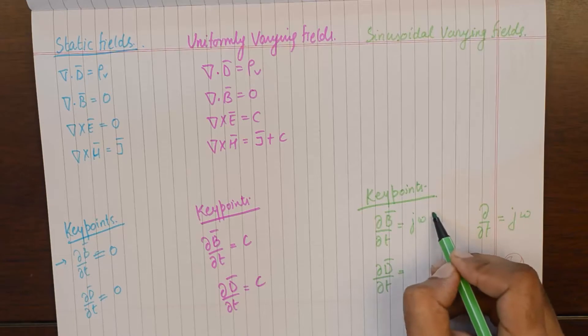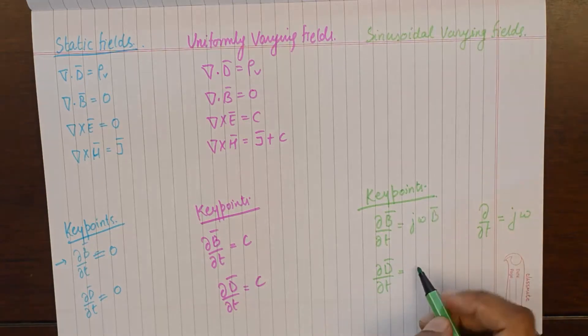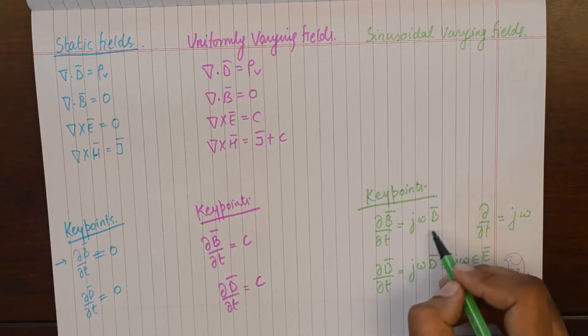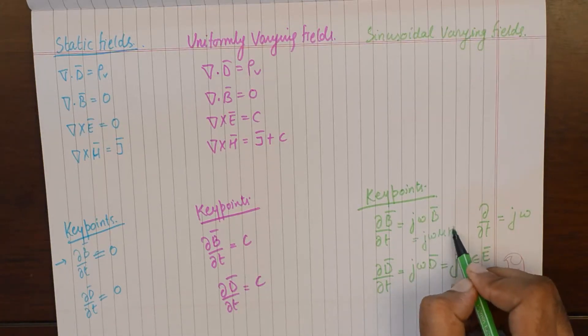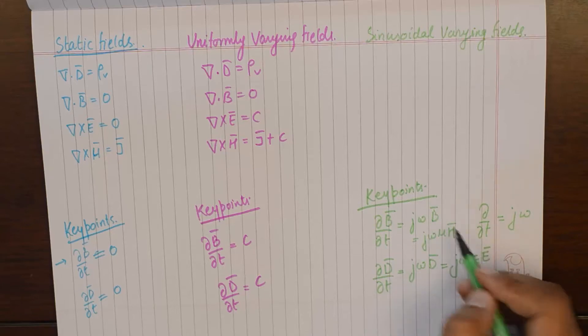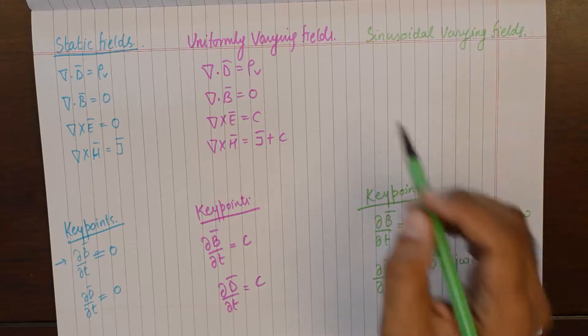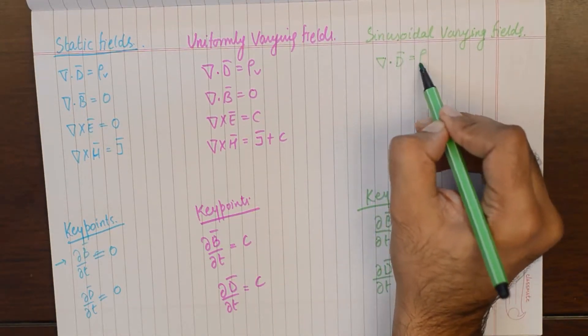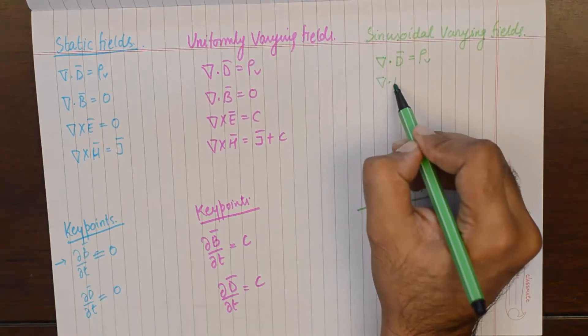It becomes jωB and it becomes jωD. A more popular way of writing this is jωεE, and this is more popularly written as jωμH, because B is μH and D is εE.